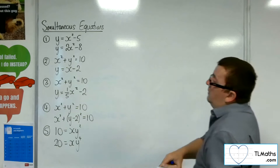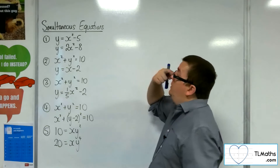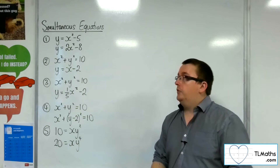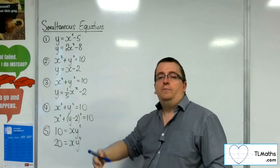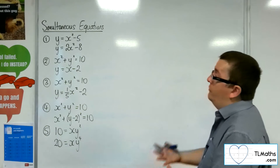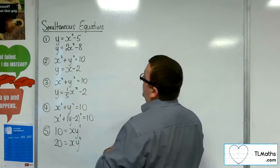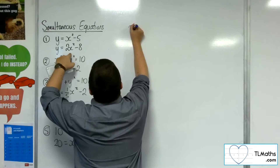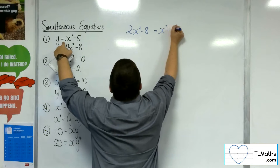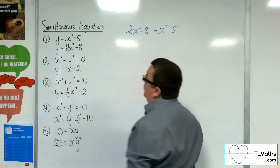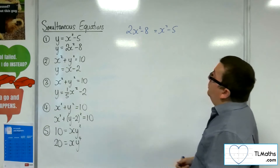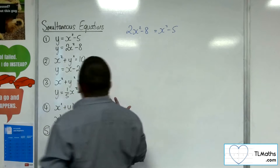We'll start with number one. Because we've got both equations as y equals some function of x, we can just put one equal to the other. We're effectively substituting one in for the y. So we can write 2x squared minus 8 as being the same as x squared minus 5, because if the y's are equal for these two equations, the right-hand sides must be equal as well.